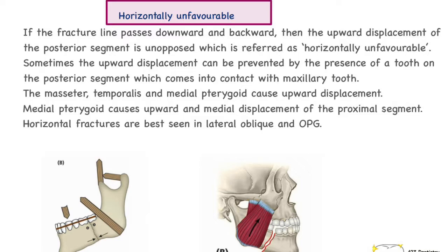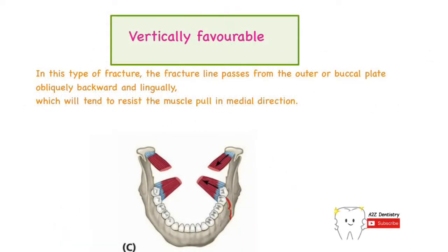For viewing horizontal fractures, the lateral oblique view is used, and we can also opt for a panoramic radiograph. Moving on to vertical fractures, in this case we are viewing the fracture line in a vertical plane, that is in the buccolingual direction.